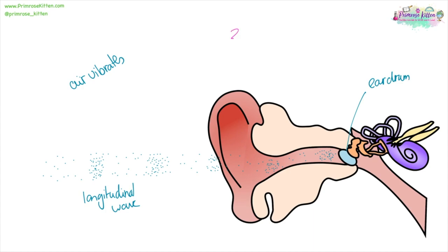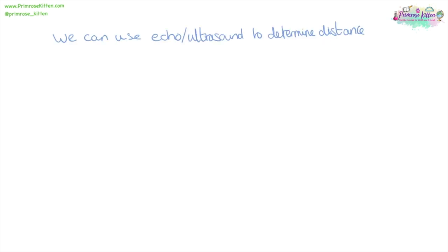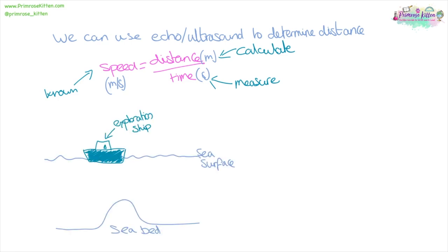The range of human hearing is 20 hertz to 20 kilohertz. We can use echo or ultrasound to determine distance. And we can do that because speed equals distance over time. So if we know the speed of the wave, we can measure the time taken and we can calculate the distance.